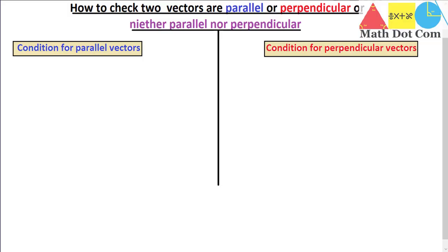Hello everyone. Today we are going to learn how you can check, if given two vectors, whether they are parallel or perpendicular to each other, or whether they are neither parallel nor perpendicular. I will tell you the conditions you have to check.